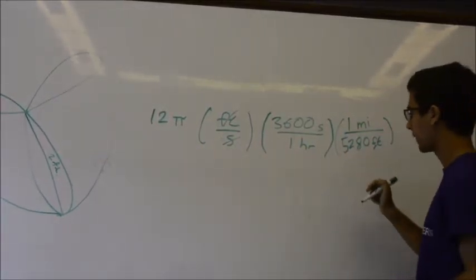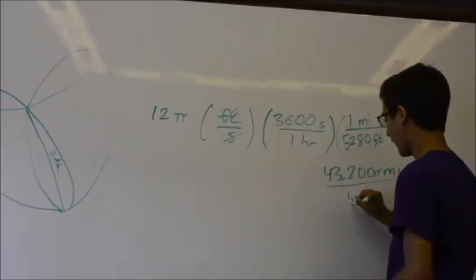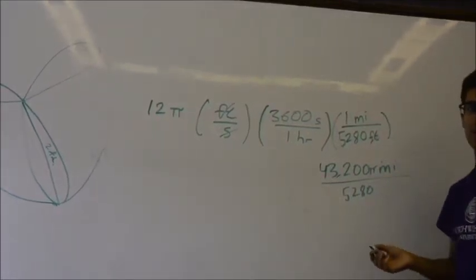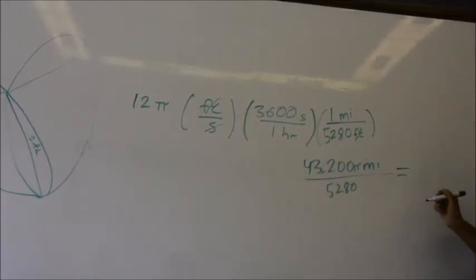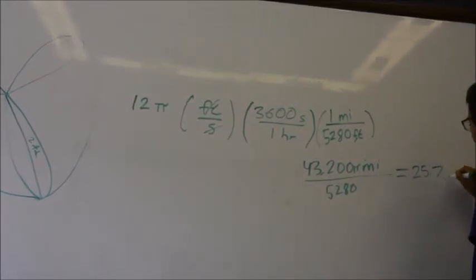So we want to convert 12π feet per second into miles per hour. So let's go over here and start using different units to figure out what this is in miles per hour. So we'll start with what we have is 12π. And this is in the units feet per second. So we now need to convert feet into miles and seconds into hours.